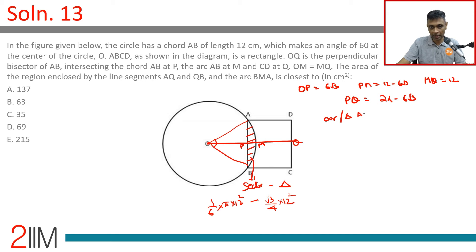Area of triangle ABQ equals half into AB into PQ, which is half into 12, 12 into 24 minus 6 root 3.